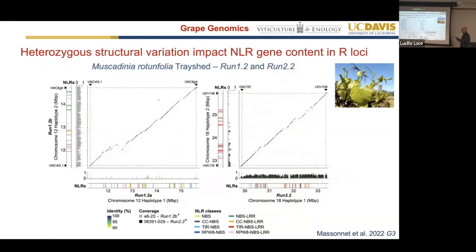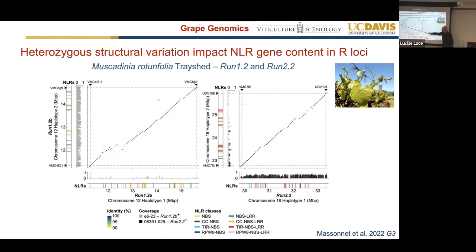Another example is Muscadine grape, Muscadinia rotundifolia. It was known to have two loci for powdery mildew resistance. We thought this resistance was homozygous because flanking markers and phenotypes appeared homozygous. When we actually looked at both RAN1 and RAN2 loci reconstructed in this species, we found that each locus is heterozygous and the NBS-LRR content is very different — none of the genes are conserved across the two alleles. So one single Muscadinia rotundifolia accession carries four loci of resistance because two are heterozygous. This was possible because we constructed the diploid genome for this species.